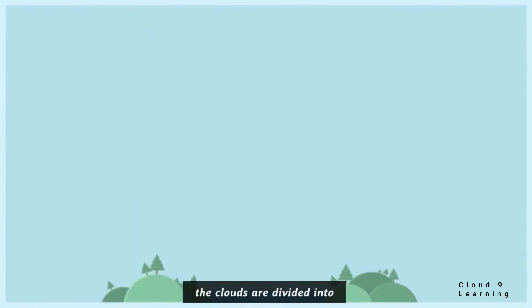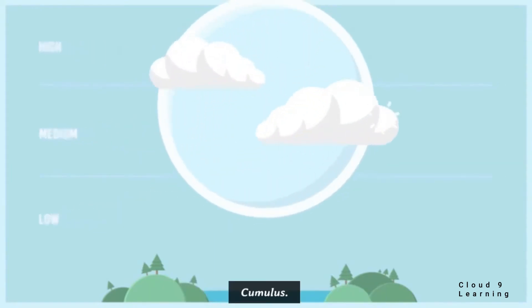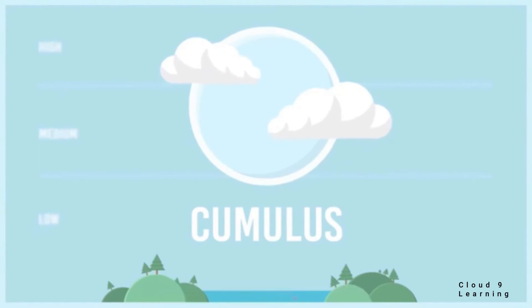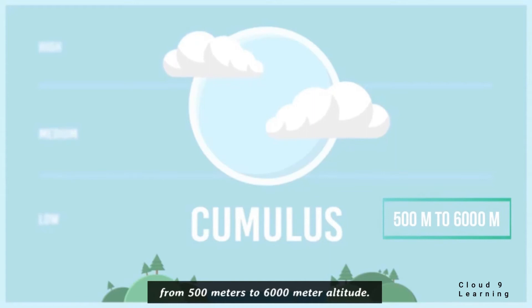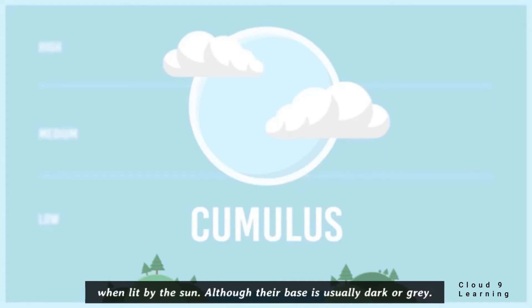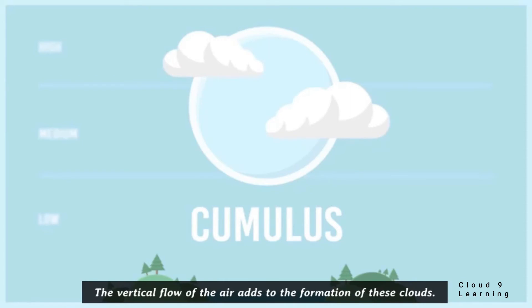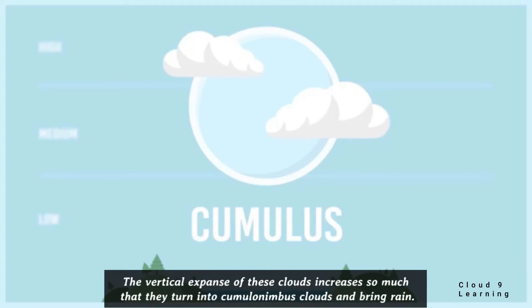Cumulus clouds are formed extensively from 500 to 6,000 meters altitude. They are fluffy, huge and dome-shaped. The top of these clouds is mostly white when lit by the sun, although their base is usually dark or gray. They are detached from one another or scattered throughout the sky. The vertical flow of air adds to their formation, and as the vertical expanse increases, they turn into cumulonimbus clouds and bring rain.